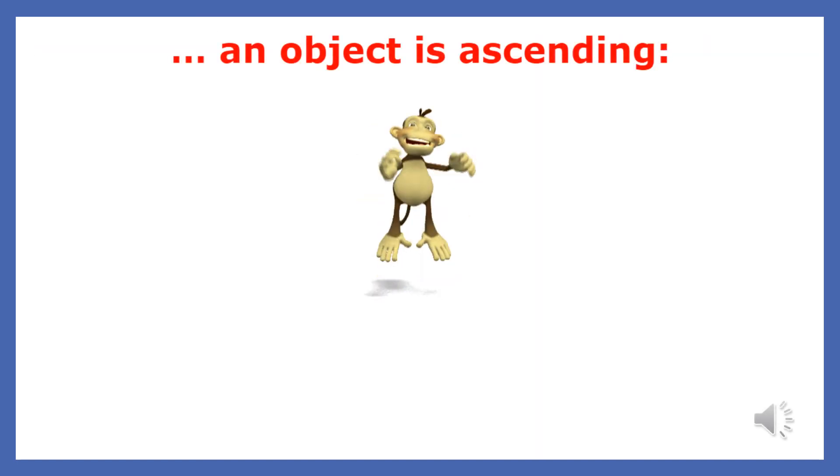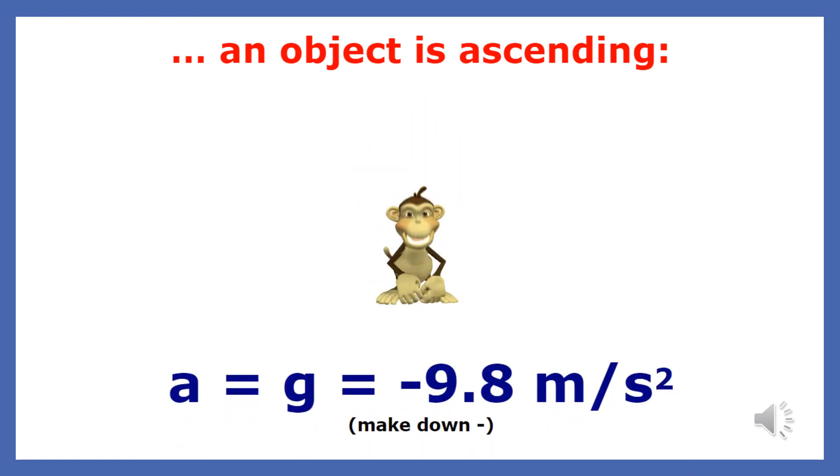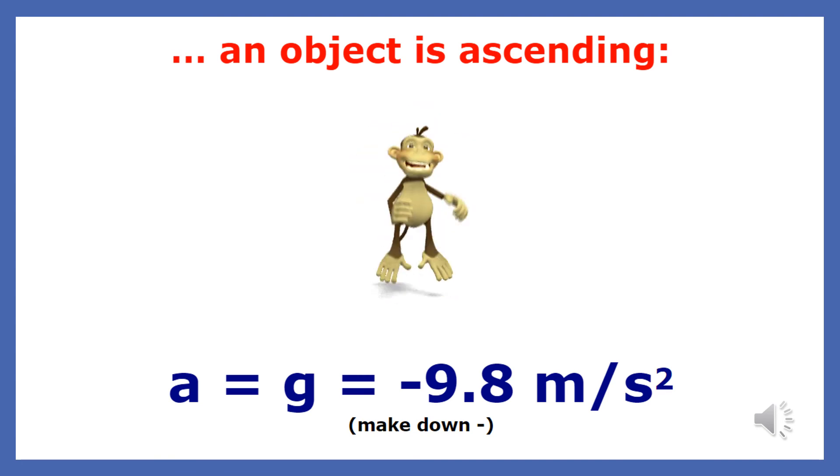If we have a free-fall problem where the object is ascending, it's useful to make the direction down negative, which makes the acceleration due to gravity negative 9.8 meters per second squared.